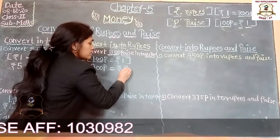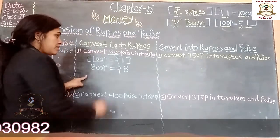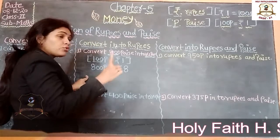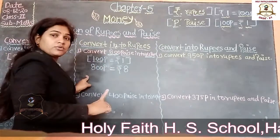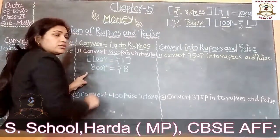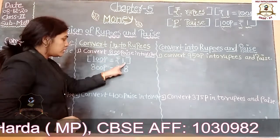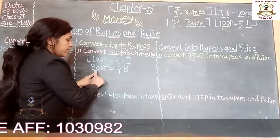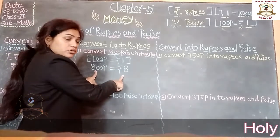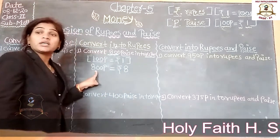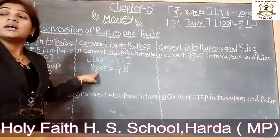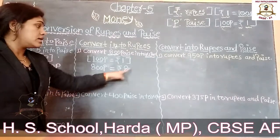So 800 paise is equal to rupees 8. We know 1 rupee is equal to 100 paise, so 100 paise equals rupees 1. Therefore 800 paise is equal to rupees 8. We simply remove the two zeros from the right side.